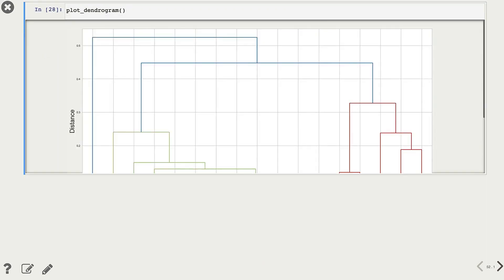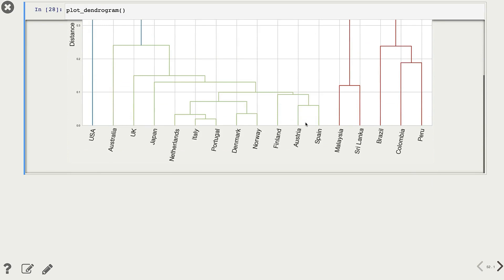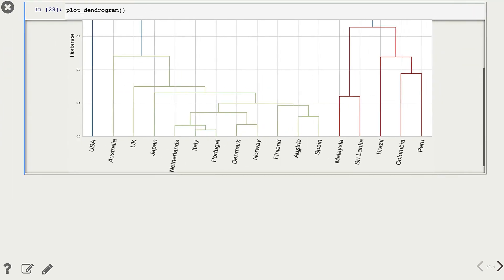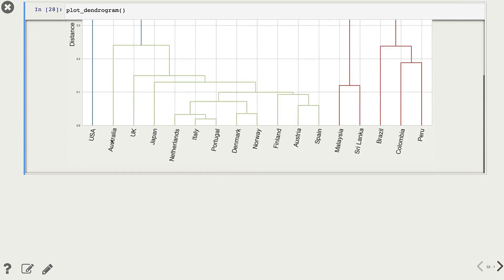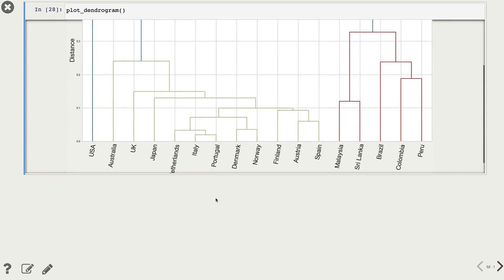Let's look at this dendrogram. So this is the dendrogram that we get. What do we see here? We have all our 17 countries here, and all European countries, we see that they are clustered together here.